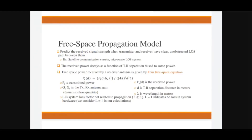The Friis equation is: Pr = Pt·Gt·Gr·λ² / (4π²·d²·L), where Pr is received power, Pt is transmitted power, Gt and Gr are the transmitting and receiving antenna gains, d is the transmitter-receiver separation distance in meters, L is the path loss component, and λ is the wavelength in meters. This is a very important equation for the free space propagation model.